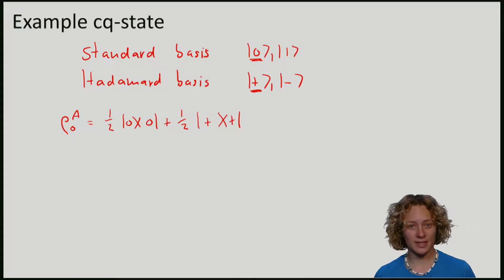Let's now suppose that I define another density matrix which corresponds to preparing 1 either in the standard basis or in the Hadamard basis with probability half. So here we associate |-⟩ with 1.